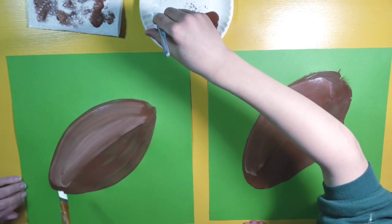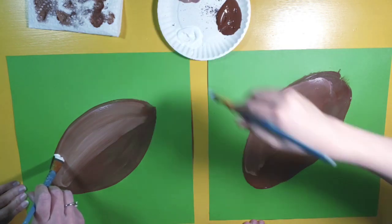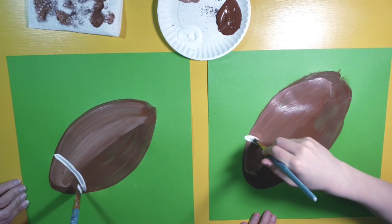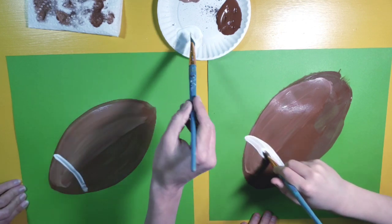And for the white paint, I'm going to hold my brush up and down and I'm going to add one stripe to my football. On this side it kind of curves away from the edge.